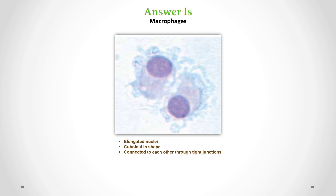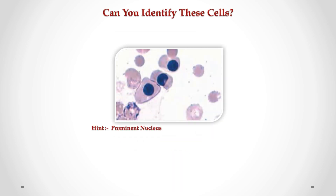Can you identify these cells in CSF? Correct answer is macrophages. We can see larger cells compared to lymphocytes and monocytes. They have a distinct irregular or amoeboid shape. The nucleus of macrophages can be round, kidney-shaped, or irregularly shaped. The cytoplasm of macrophages is abundant.